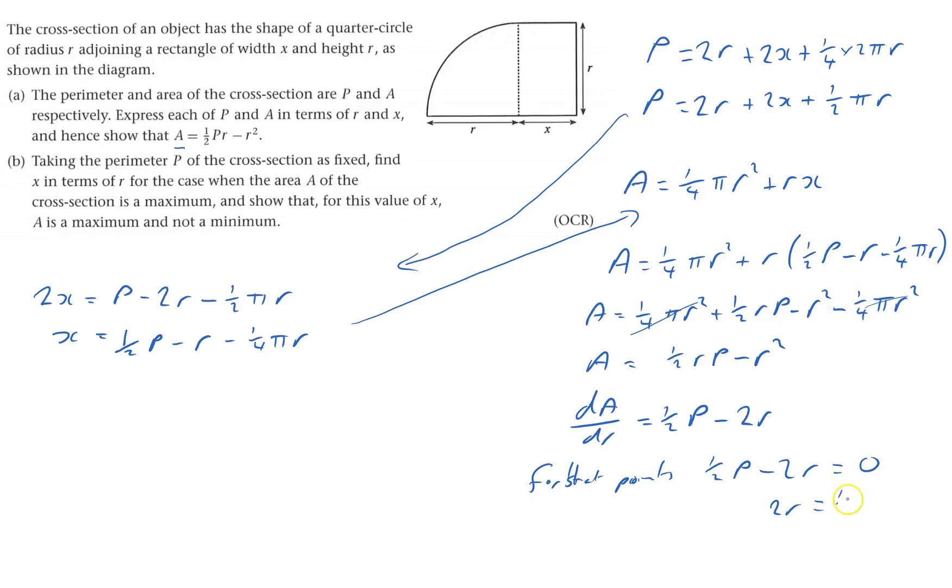So a half P minus 2r equals zero. So 2r equals a half P, and so r equals, I don't want r, I want P. So P will equal 4r. So we've got P is 4r.